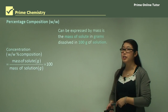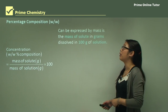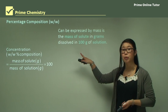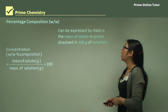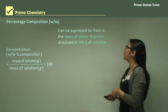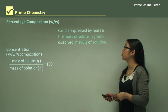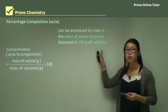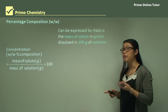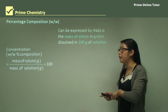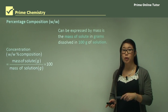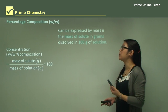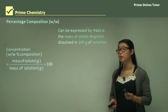Another one is percentage composition weight-to-weight, which is what W to W means. It's expressed as the mass of solute in grams dissolved in 100 grams of solution — so it's the weight of the solution. Remember that one gram of water is equal to one mil of water.